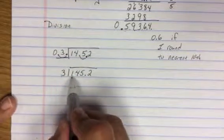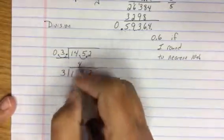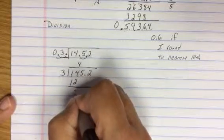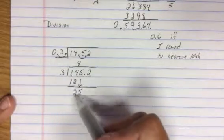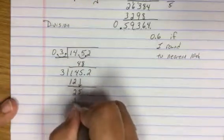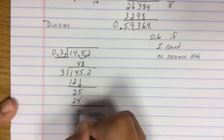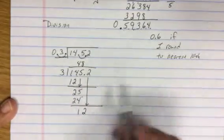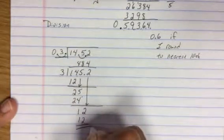Now does 3 go into 1? No. Does 3 go into 14? Yes. 4 times. 4 times 3 would be 12. I subtract. I drop the 5. 3 goes into 25, 8 times. 8 times 3 is 24. 25 minus 24 is 1. I drop the next one. I have 3 going into 12, 4 times. I'm done.